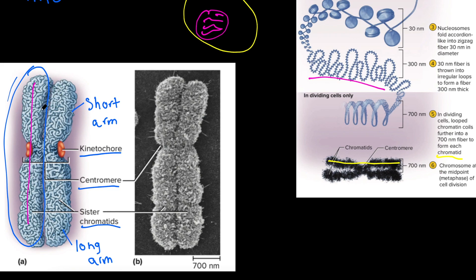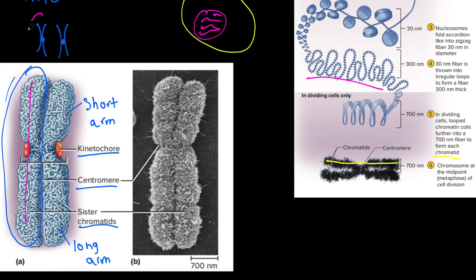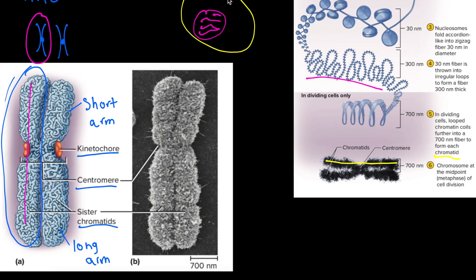In the human body, we have 46 chromosomes — also 23 pairs of each. One chromosome in each pair is given from our mom, and one is given from our dad. So we have 23 pairs of chromosomes, each given by one parent.